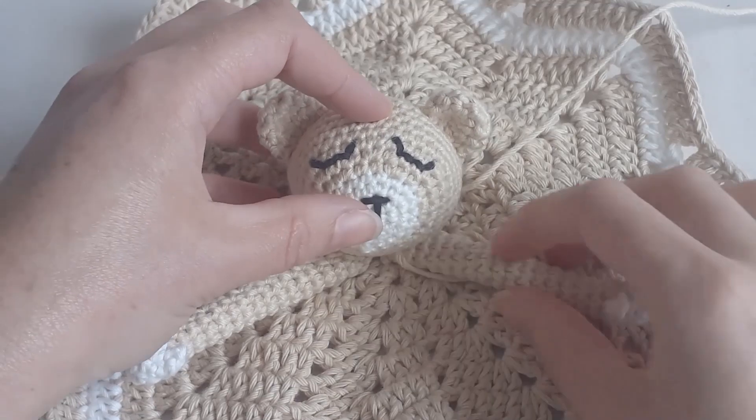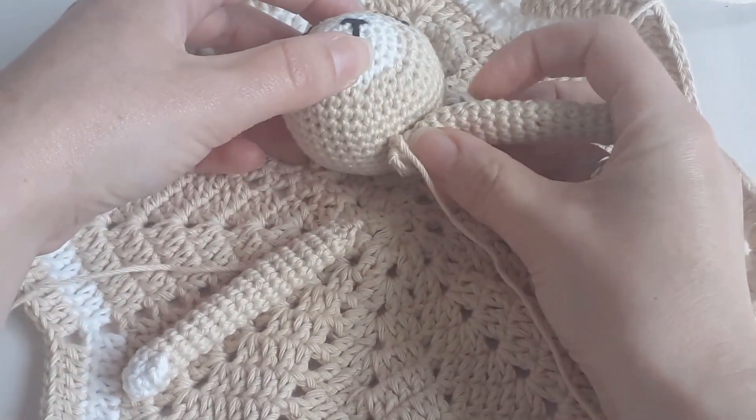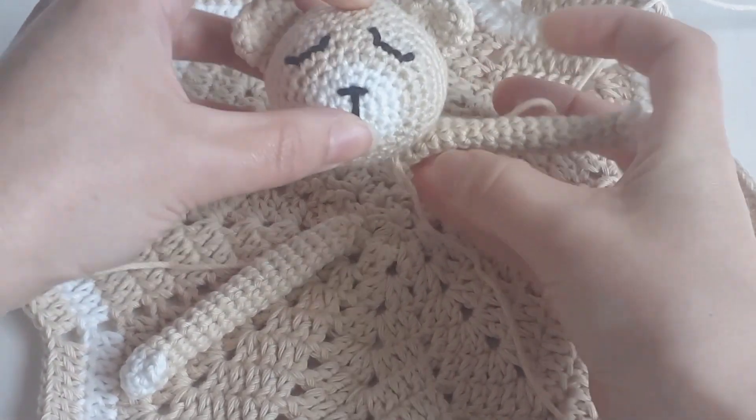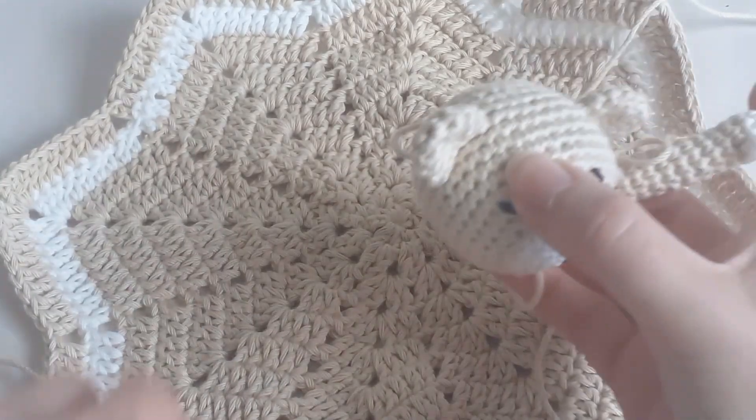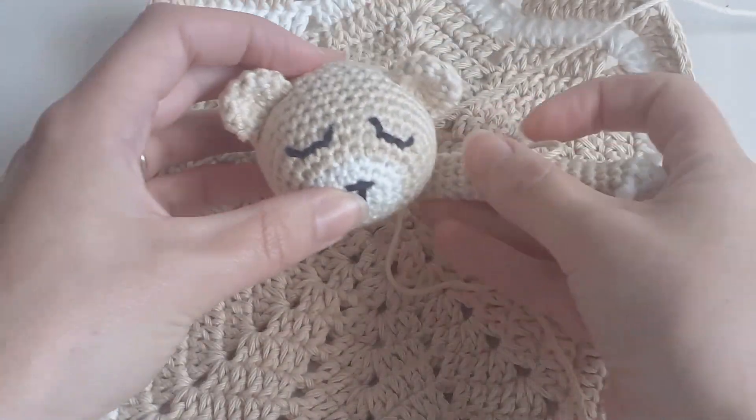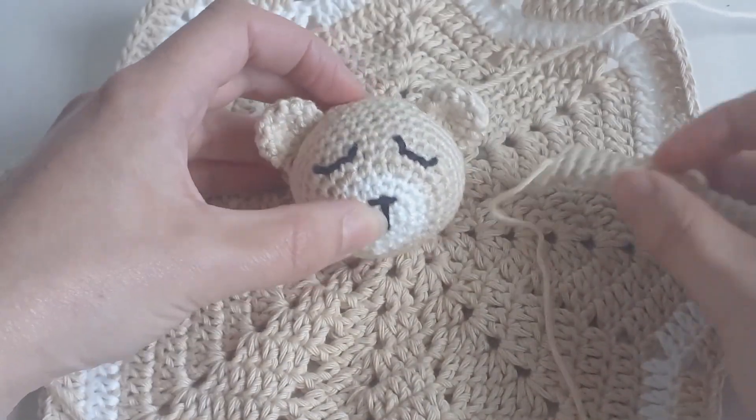I line everything up and then I stitch the arms on underneath, and then I stitch the head onto the blanket right in the center.